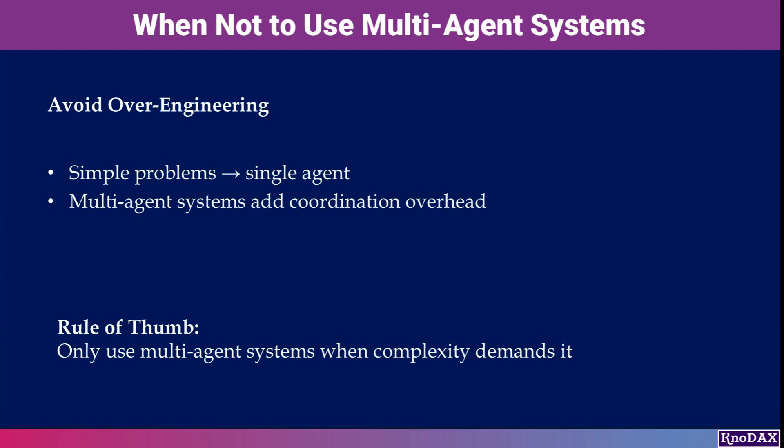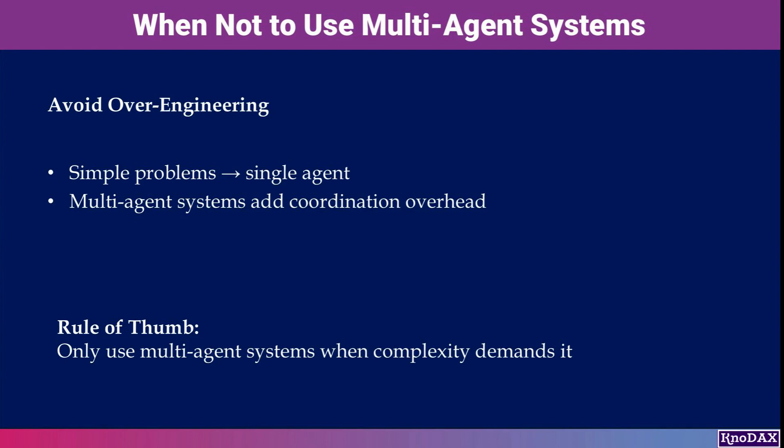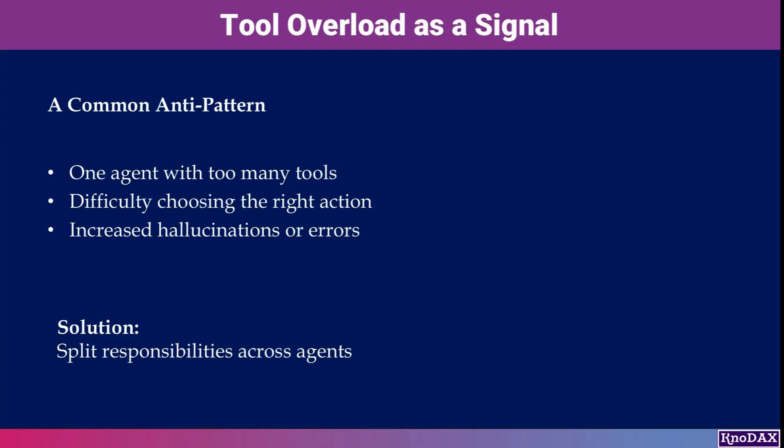Multi-agent systems make sense when you're dealing with layered decision-making, validation steps, or iterative refinement. If your workflow feels complex even to a human, it's a strong candidate for multi-agent design.